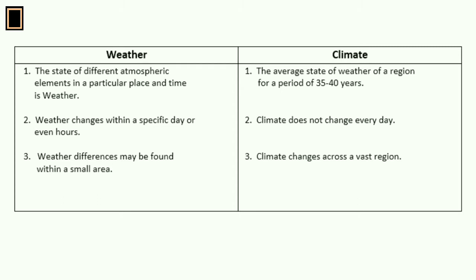There are basic differences between weather and climate. The state of different atmospheric elements in a particular place and time is known as weather. The average state of weather of a region for a period of 35 to 40 years is known as climate. Weather changes within a specific day or even hours, but climate does not change every day.